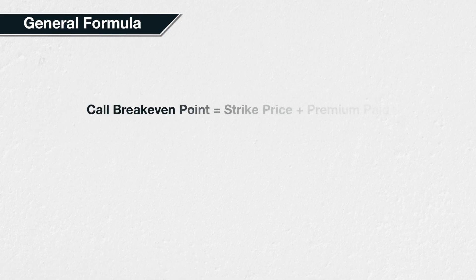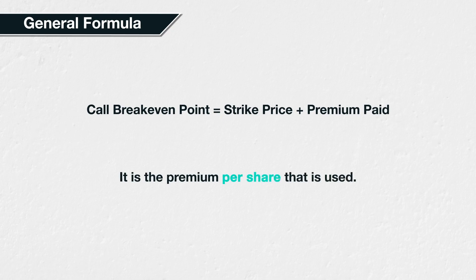More generally, the break-even point of a call option can be calculated as the strike price plus the premium paid. It's important to remember that it's the premium paid per share that you need to use in this calculation. The contract multiplier for SLV was 100, so the total premium paid was one hundred and twenty six dollars — but it is the per share price of one dollar twenty six that we use when making the break-even calculation.